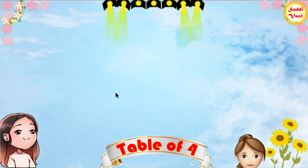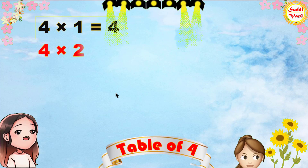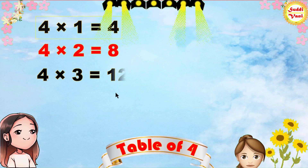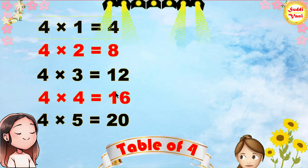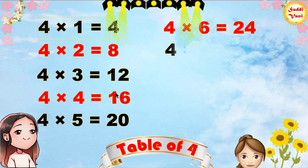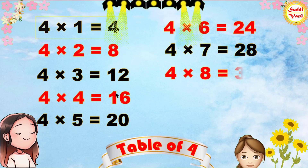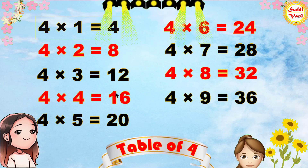Once again: 4 times 1 is 4, 4 times 2 is 8, 4 times 3 is 12, 4 times 4 is 16, 4 times 5 is 20, 4 times 6 is 24, 4 times 7 is 28, 4 times 8 is 32, 4 times 9 is 36.